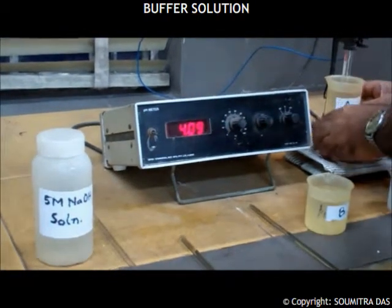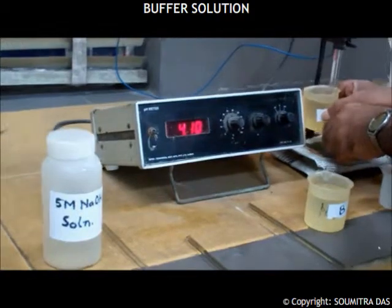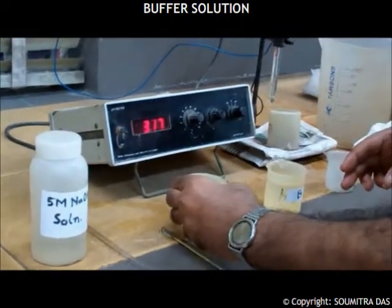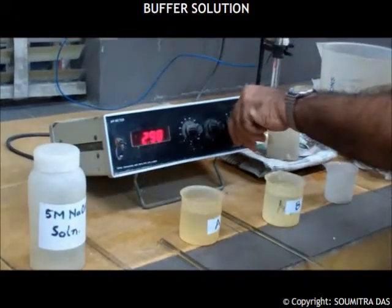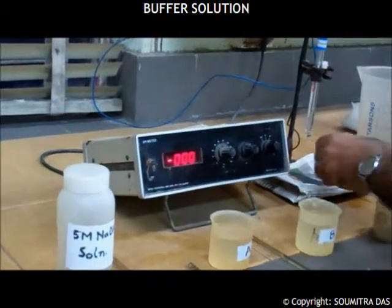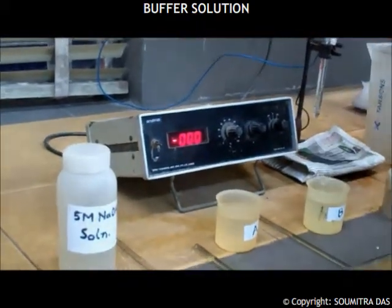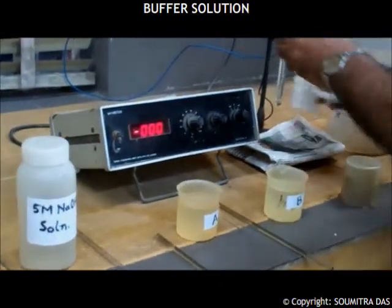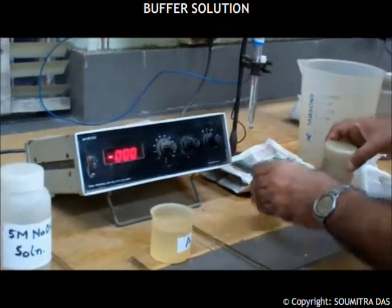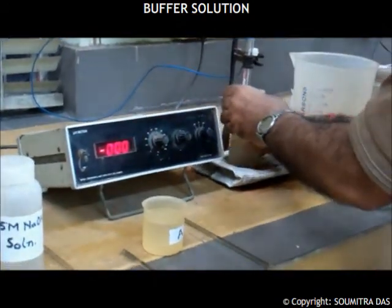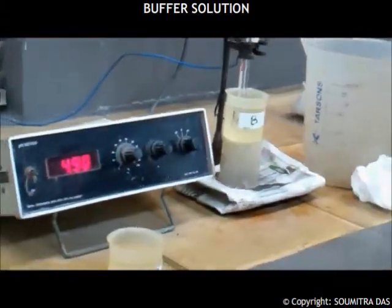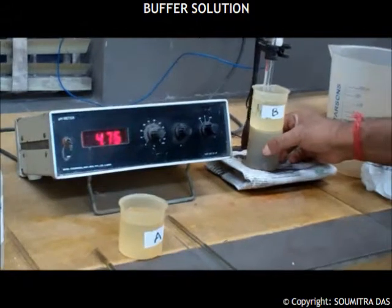The value is equal to more or less 4.1. We similarly measure the pH of the solution kept in beaker B after it reaches a steady value.